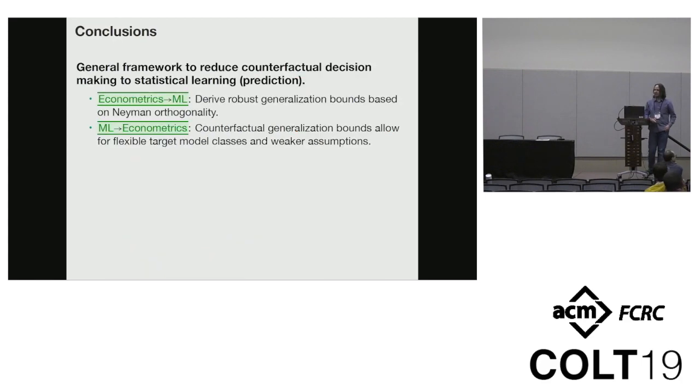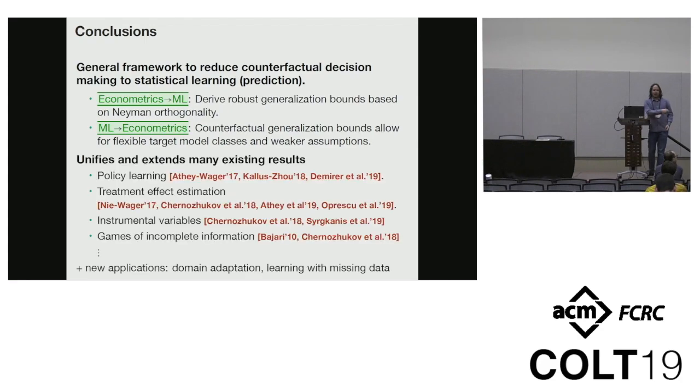To summarize, we have a general framework for reducing counterfactual decision-making to statistical learning. This is based on a nice interplay between these tools from econometrics and machine learning. We're able to take this idea of Neiman orthogonality from econometrics and use it to derive robust statistical learning guarantees. Then we're able to take these statistical learning guarantees and apply them back to these decision-making problems across a variety of settings. For the COLT audience, the main thing I want to emphasize is that we hope this will serve as a good starting point to start to explore more interesting learning theoretic questions across all these different decision problems. Thanks.